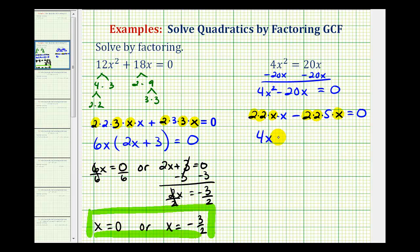So if we factor out 4x, we're going to be left with x minus 5 equals zero. And again, if this product is equal to zero, then either the first factor of 4x must equal zero, or the second factor of x minus 5 must equal zero. And now we'll solve these two equations for x to find our solutions.